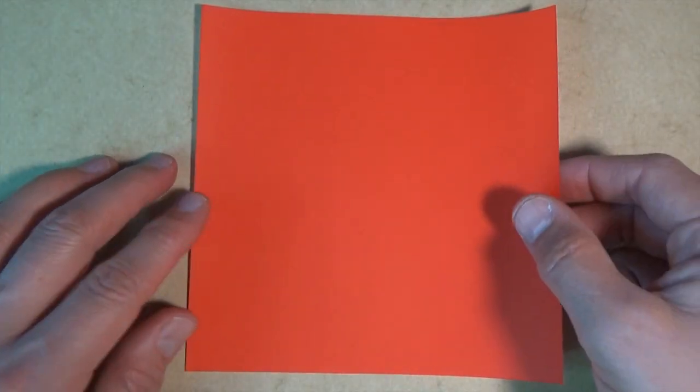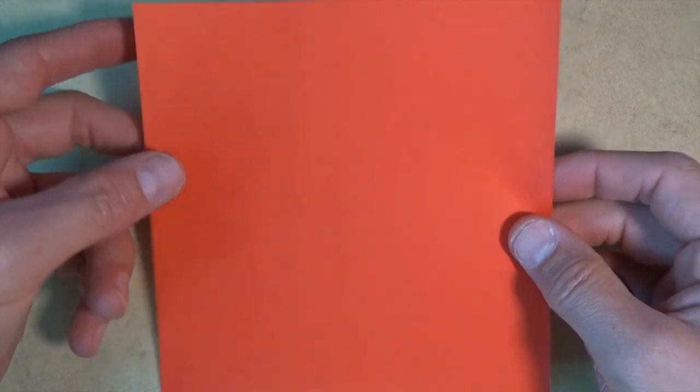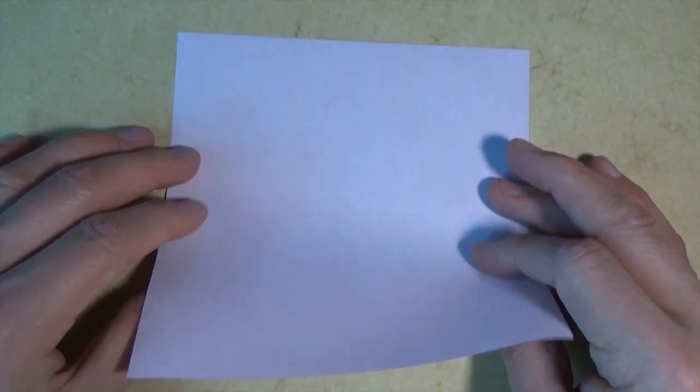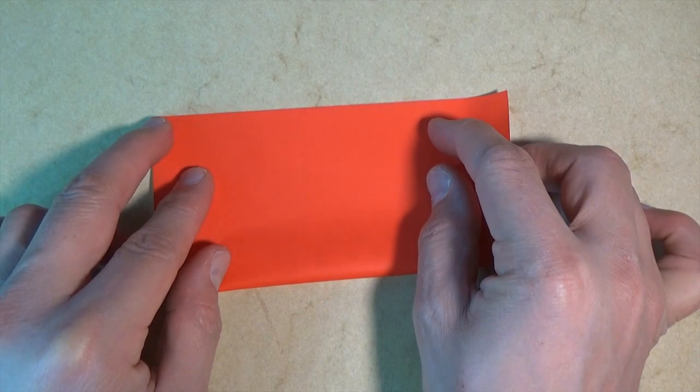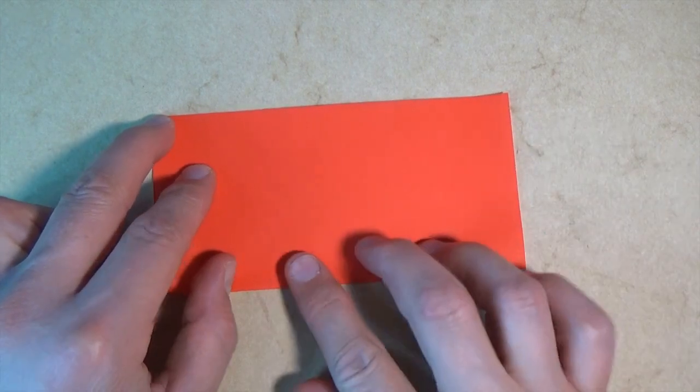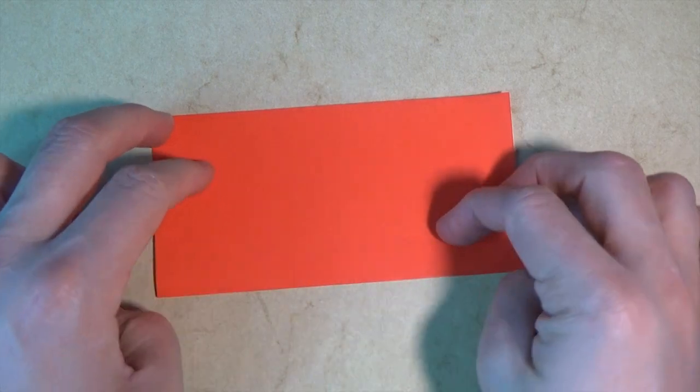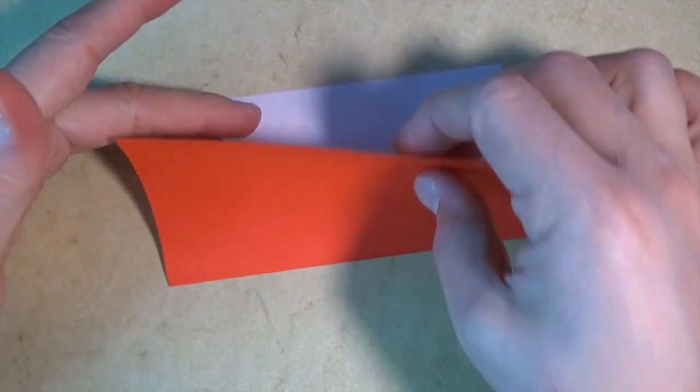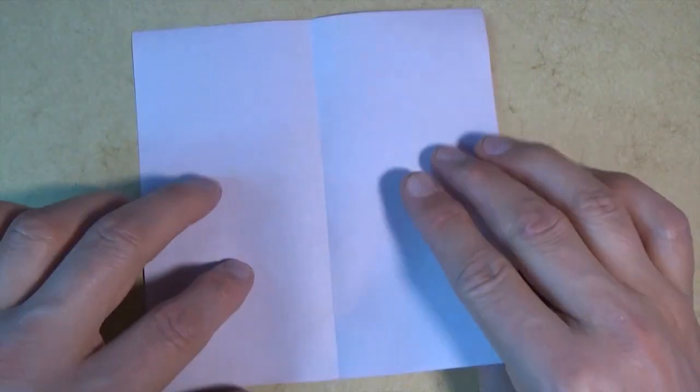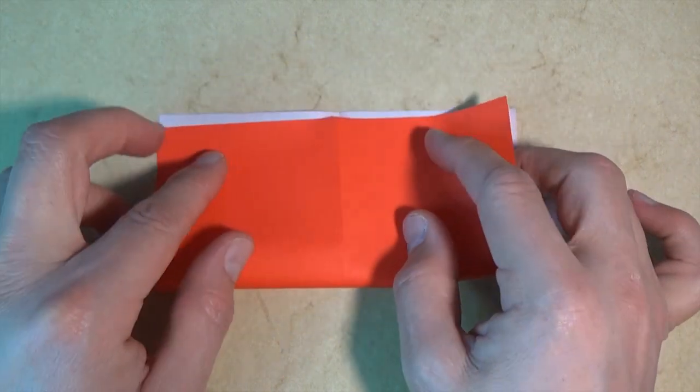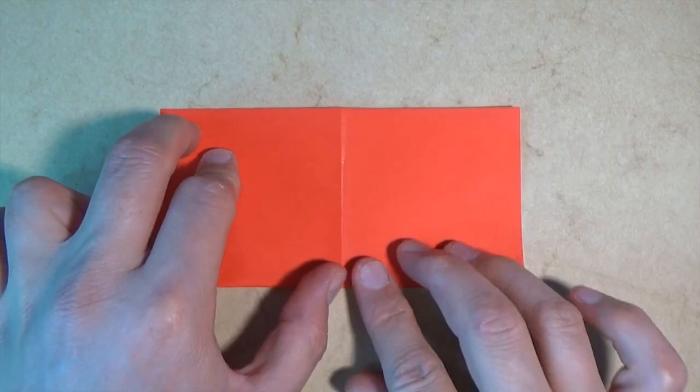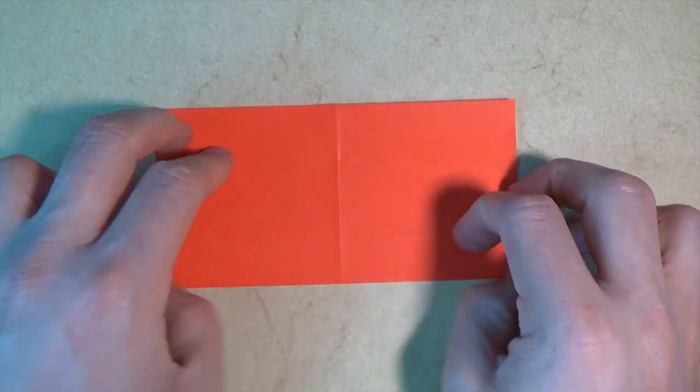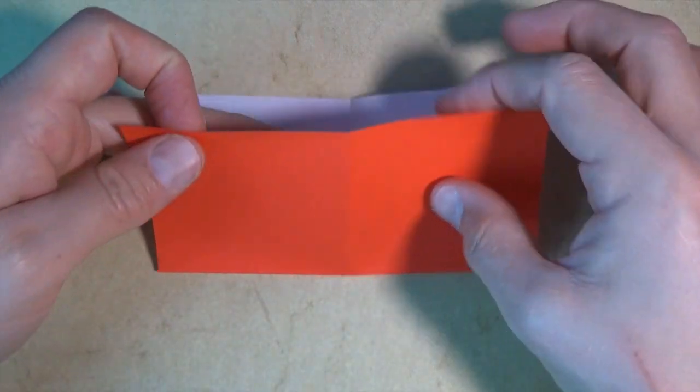Alright, so for this model I'm going to use a 6-inch square of origami paper. Let's begin white side up and let's valley fold in half. Try to make really exact folds and crease sharply. Now let's unfold and rotate and let's fold in half in this direction. And unfold.